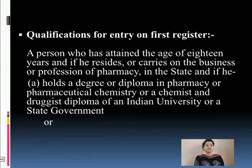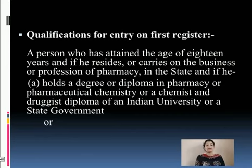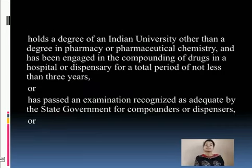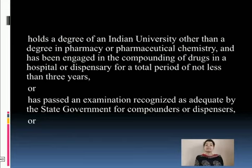There are certain qualifications to be fulfilled if you want to get your name entered in the first register. A person who has attained the age of 18 years and who resides or carries on the business or profession of pharmacy in the state must have the following qualifications: he holds a degree or diploma in pharmacy or pharmaceutical chemistry, or a chemist and druggist diploma of any Indian University or state government university; or he holds a degree of an Indian University other than a degree in pharmacy and has been engaged in the compounding of drugs in a hospital or dispensary for not less than three years.